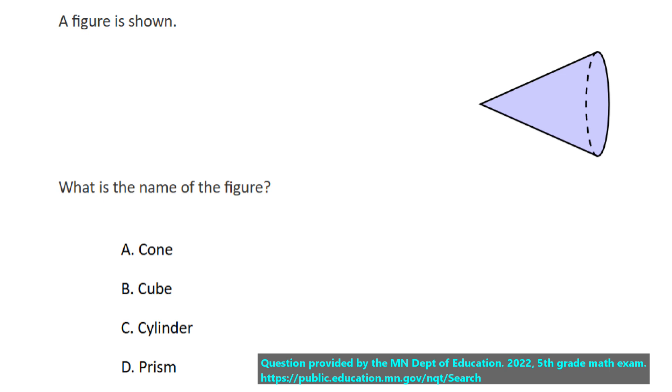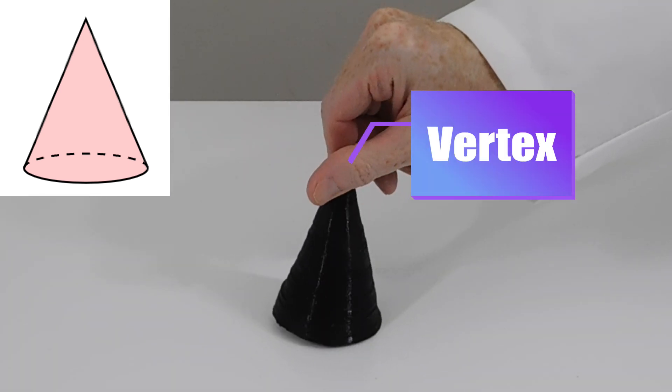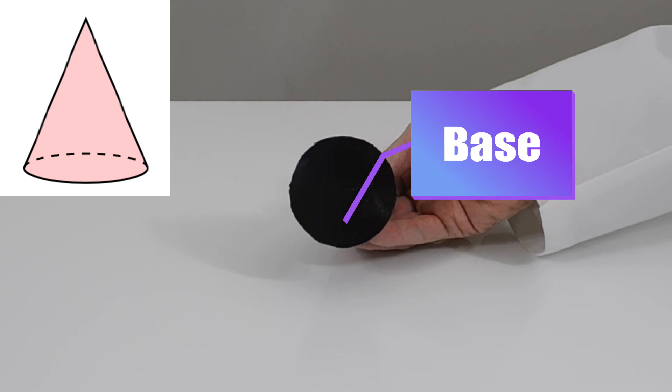A figure is shown. What is the name of the figure? This is a cone. We know that because it has one vertex and a disk as a base. The dashed line is a curve that is behind the surface that we are currently looking at.